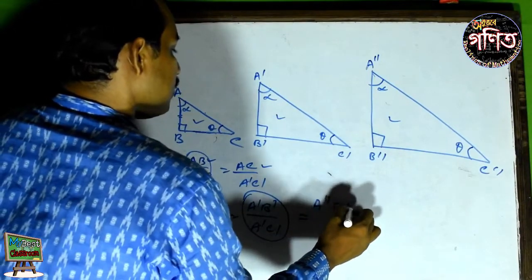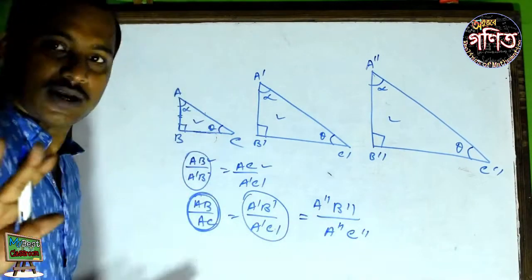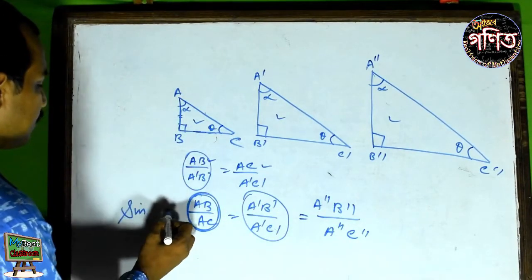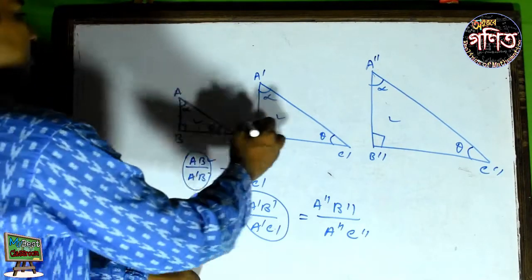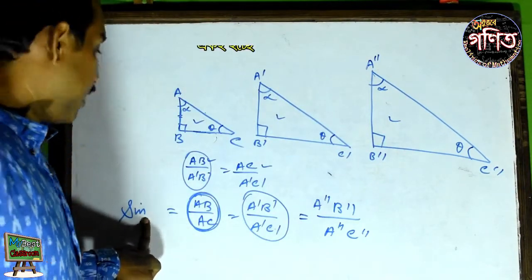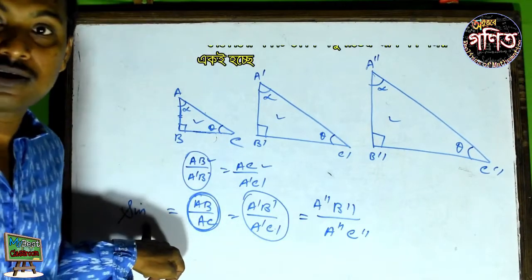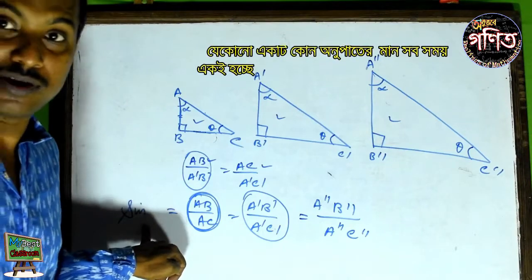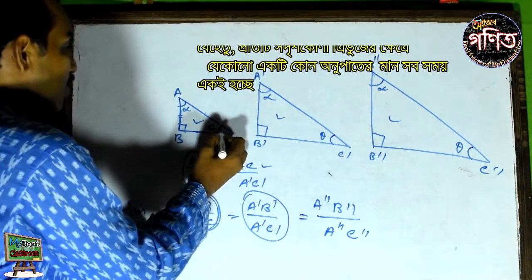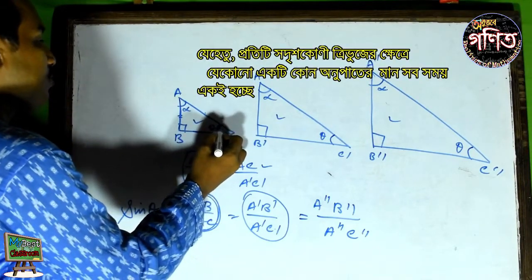Now, if I take a look at A double-dash by C double-dash — both good — double-dash C double-dash. Now the name is Sin. Now, the difference between sin — it's a problem with the positive sign. I'll give you a problem with a positive sign.